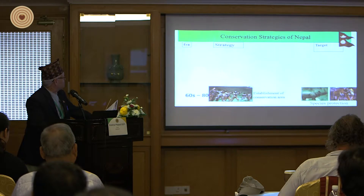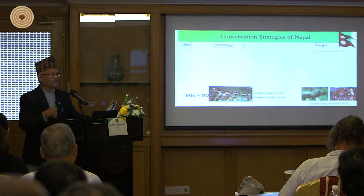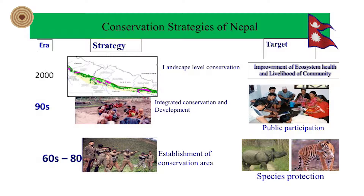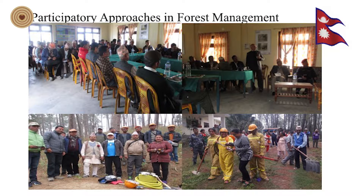From the 1960s to 1980s, more conservation strategies were established with specific protection enforced legally. In the 1980s, participatory approaches were applied. In the 1990s, we integrated conservation and development and initiated public participation. After 2000, landscape-level conservation improved ecosystem health and community-based livelihood. After the 1990s, participatory approaches were implemented at different levels — working level, policy-making level, and monitoring level.